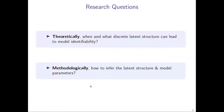Identifiability is a fundamental concept in statistics. It refers to the property that based on the observed data distribution, we can uniquely identify some quantities. This is a fundamental prerequisite for valid statistical inference — because if we cannot uniquely identify the parameters or the latent structures, we cannot reliably use them in downstream analysis. But with latent variables, the identifiability problem can be quite challenging to address.